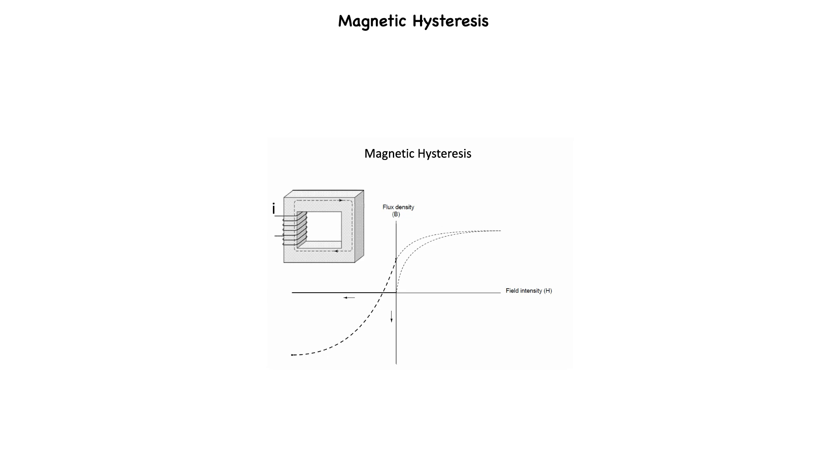If we reapply power in the positive direction again, we should see the flux density reach its prior peak in the upper right-hand corner of the graph again.